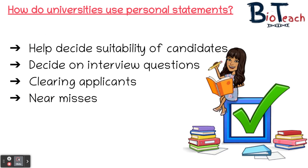The admissions staff at universities use personal statements to do a number of different things. The main one is to help decide on suitable candidates for their course. They're looking for students who are genuinely interested in the subject they're applying for, what you've done to pursue that interest, the activities you've undertaken to develop your knowledge, and the qualifications that you already have or are working towards.